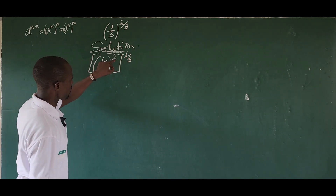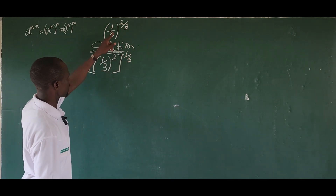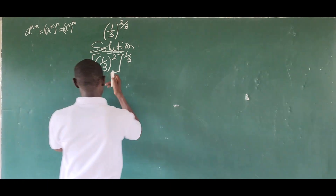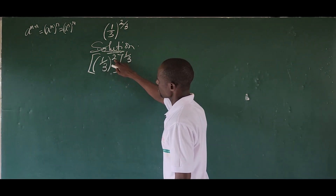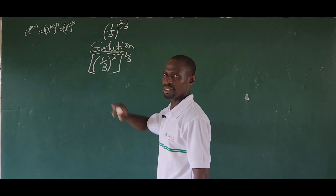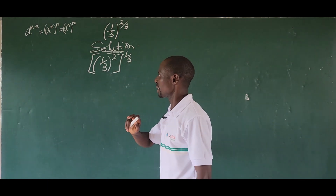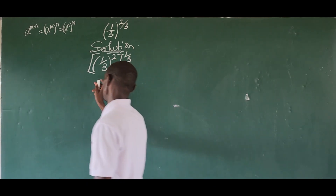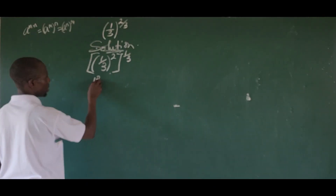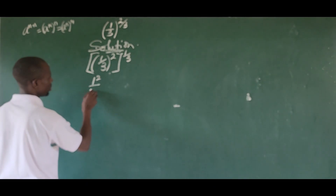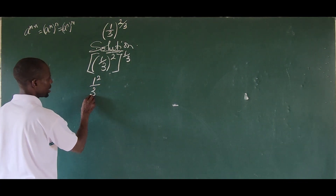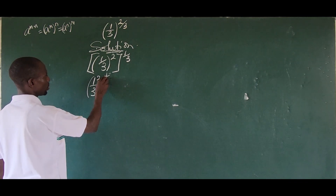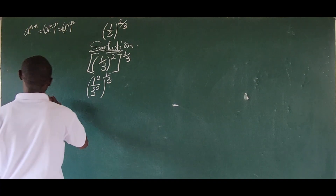Using this law, we can distribute this power into the quantity we have in the bracket. So this is going to give us one to the power of two, all over three to the power of two, all raised to one all over three.